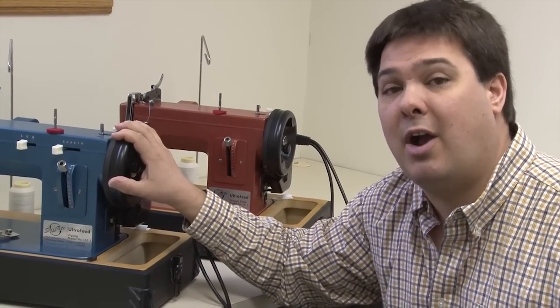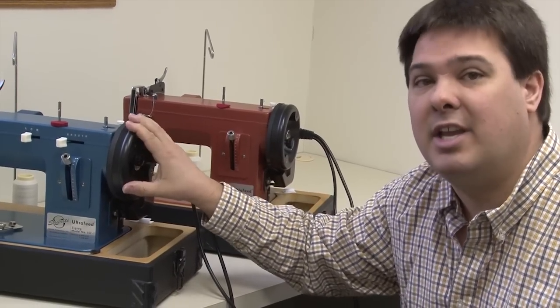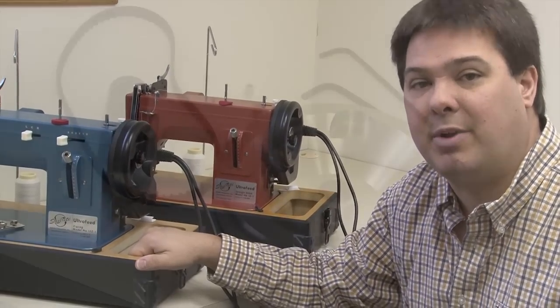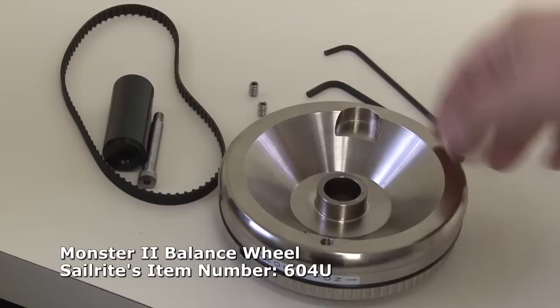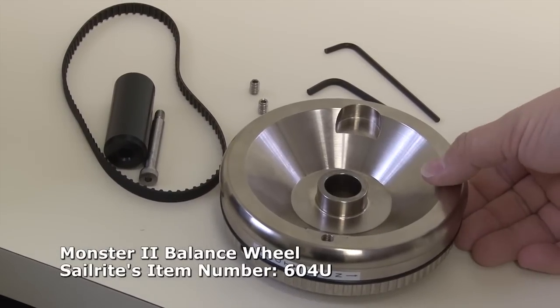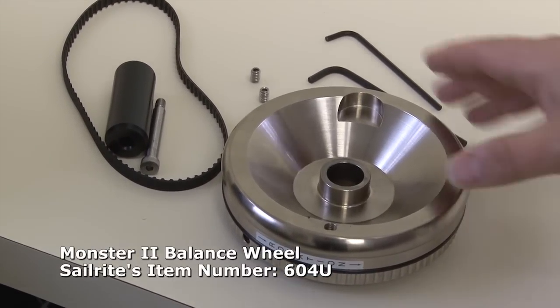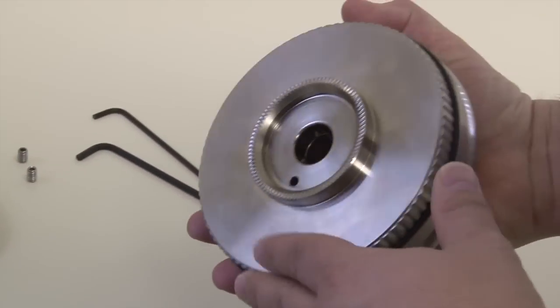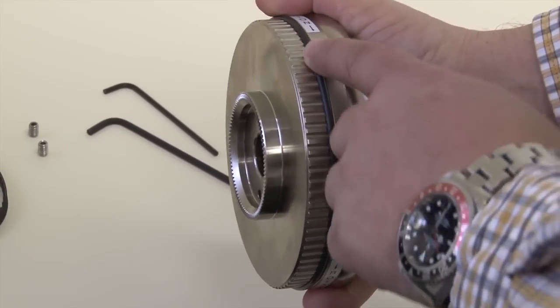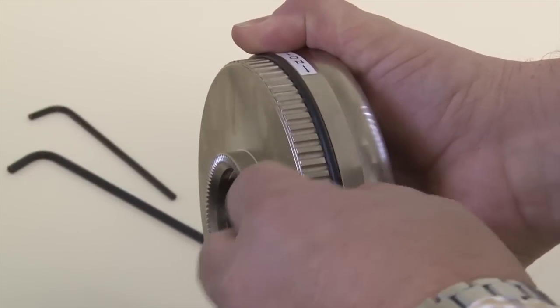I want to show you how easy it is to take your standard assembly and just add the Monster 2 flywheel. These are the parts that come with the Monster 2 flywheel kit, which is our part number 604U. You of course get the Monster wheel and you'll notice our Monster wheel has a buffer belt here to keep the primary belt from wearing against the metal edge of the wheel.